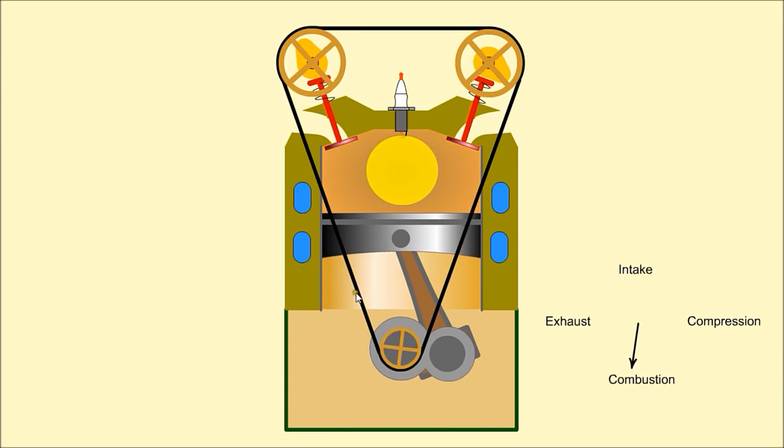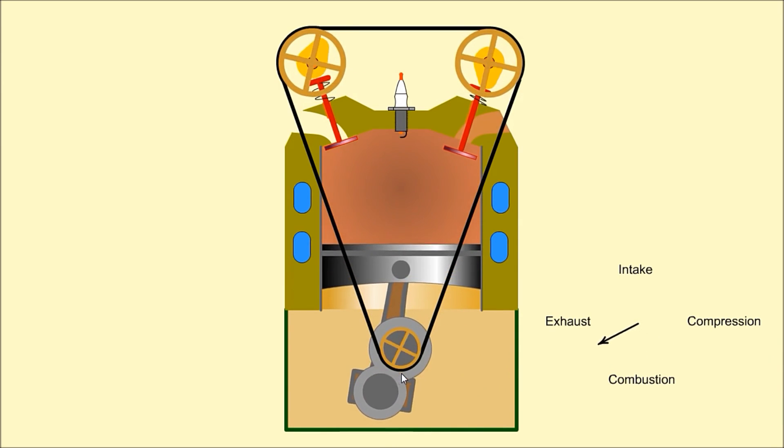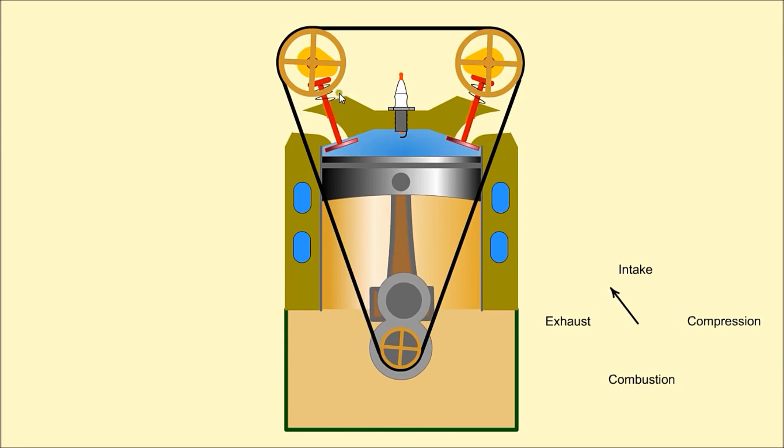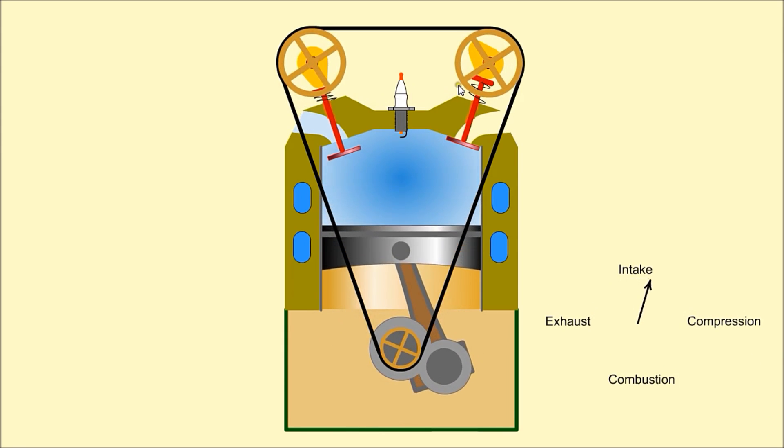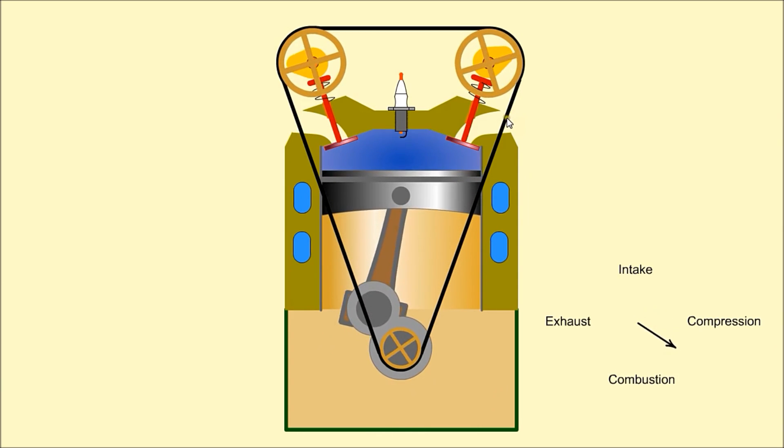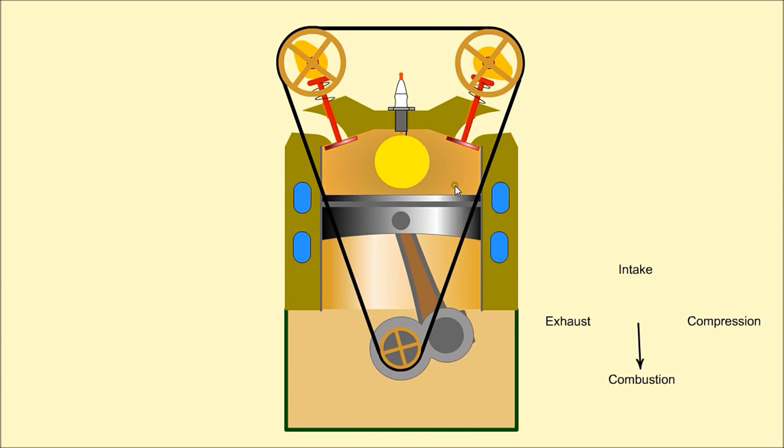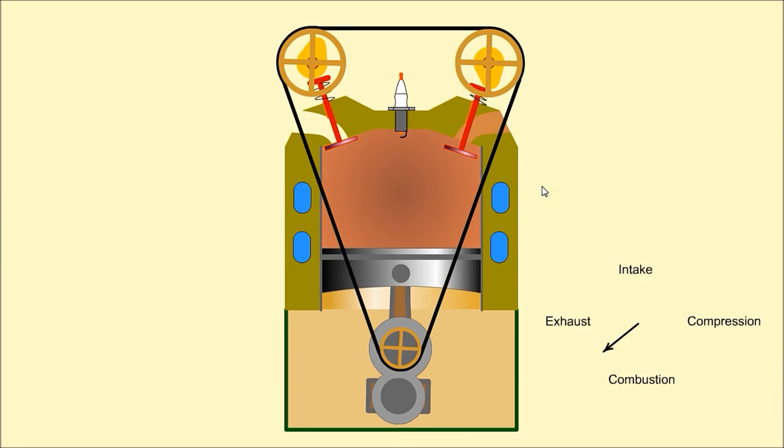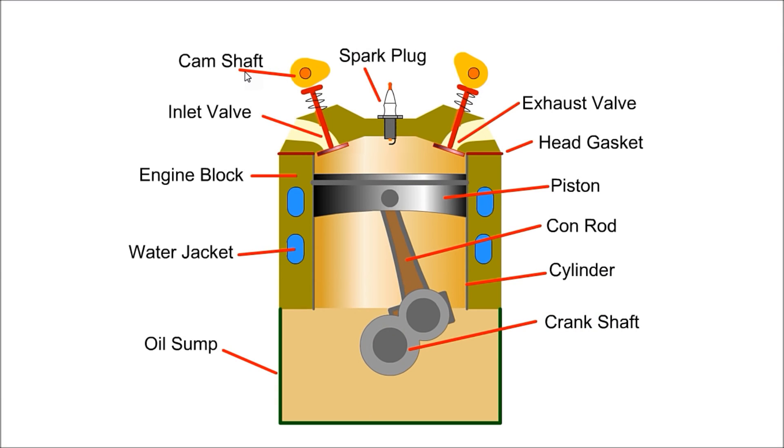This is achieved by using larger diameter pulleys on the camshafts. The timing belt ensures that the valves open and close at the correct time relative to the position of the piston.